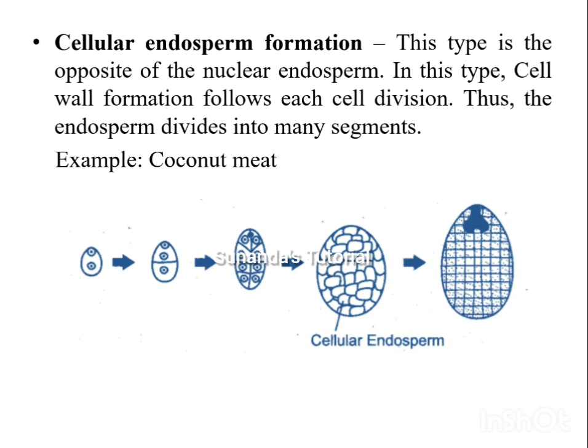In cellular endosperm formation, cell wall formation follows each cell division. The endosperm divides into many segments. The coconut meat — the part of the coconut we eat — is the typical example of cellular endosperm.